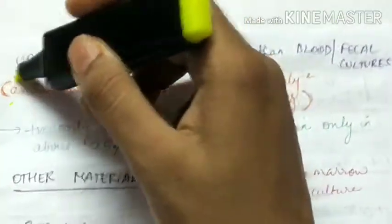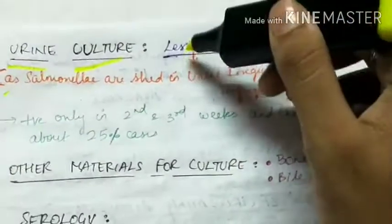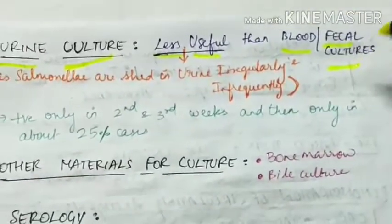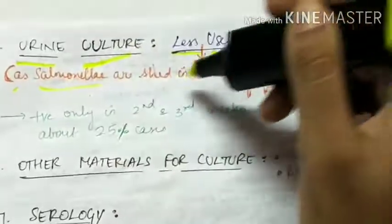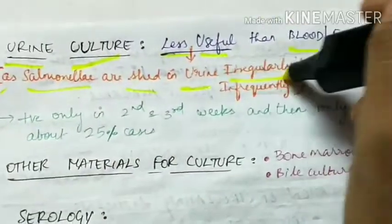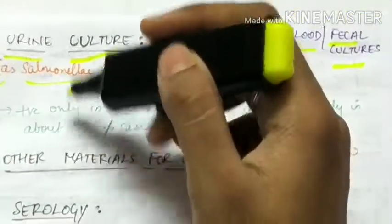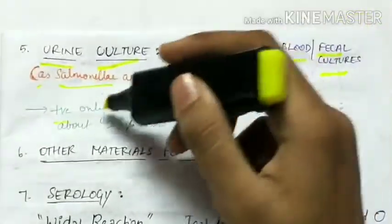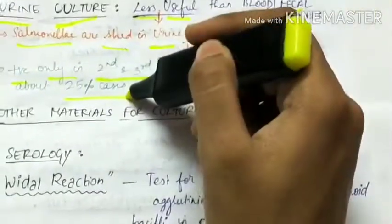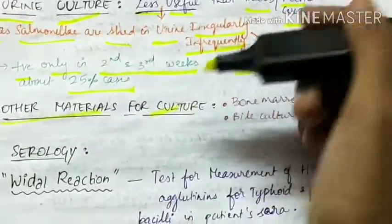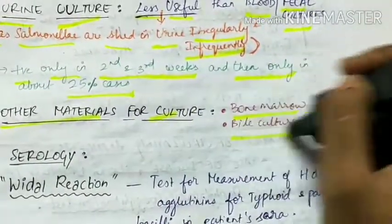Urine culture is less useful than blood or fecal cultures because Salmonella are shed in urine irregularly and infrequently. Urine culture is positive only in the second and third weeks and in only about 25% of cases. Other materials used for culture are bone marrow and bile culture.